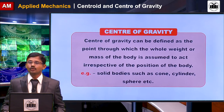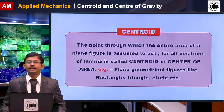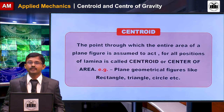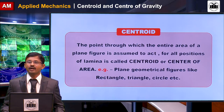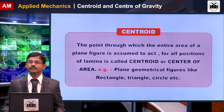Solids such as a cone, cylinder, and sphere are examples relevant to center of gravity. The next concept is centroid. Centroid is the point at which the entire area of a plane figure is assumed to act for all positions of the lamina; it is also called the center of area.